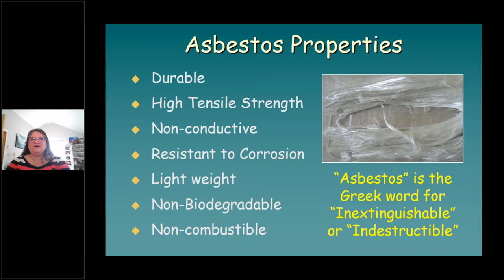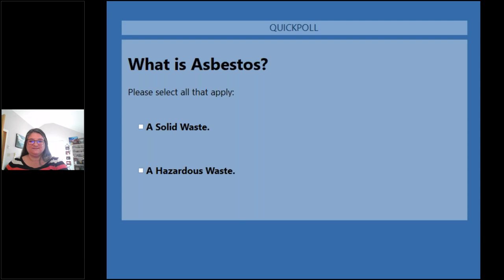As you now know, asbestos has many properties that make it extraordinarily useful to human society. It is very durable with the tensile strength equivalent to a piano wire, non-conductive, non-combustible, lightweight, and non-biodegradable. When I first heard all of those things, I thought: when someone disposes of it, what happens to it? I'm going to leave you guys with a poll question: what is asbestos when you dispose of it — a solid waste or a hazardous waste? 36% said a solid waste, 91% said a hazardous waste, and many said both. It cannot be both. Think about that while we go through all of this.